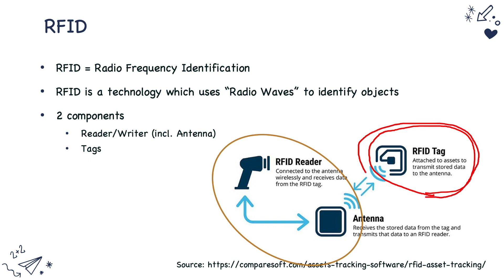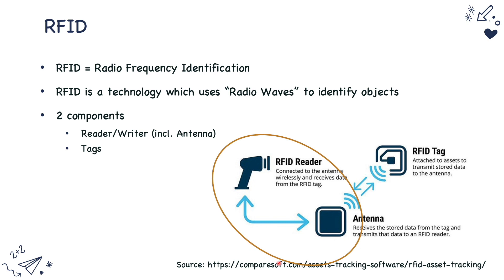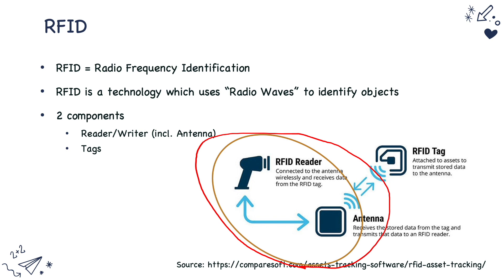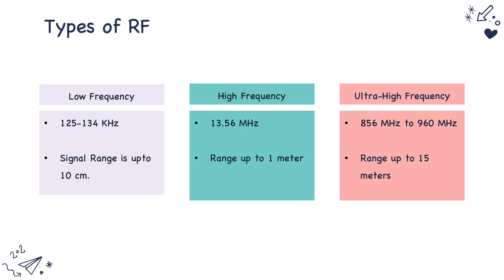The RFID tag is the object that is to be tracked. The second component is the RFID reader — the brain in RFID technology. These are devices that transmit radio waves, receive information from the tag, and do further processing. It consists of two main components: the RFID reader which processes the received information, and the antenna which transmits radio waves and receives the information back.